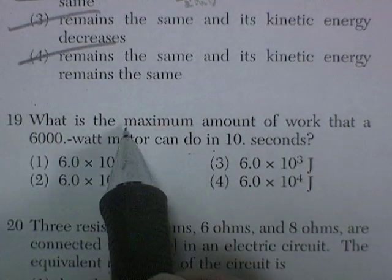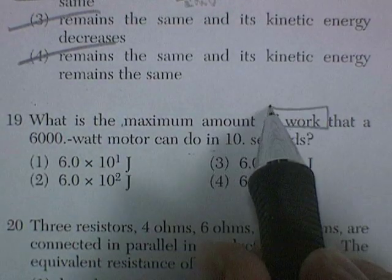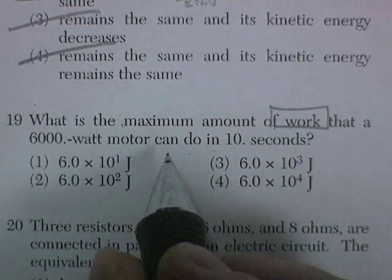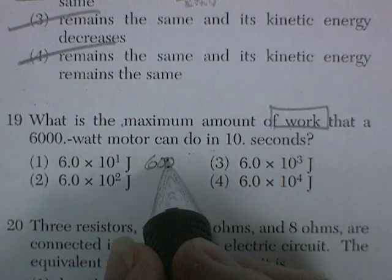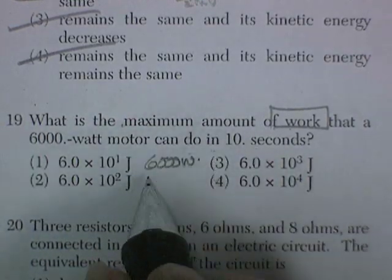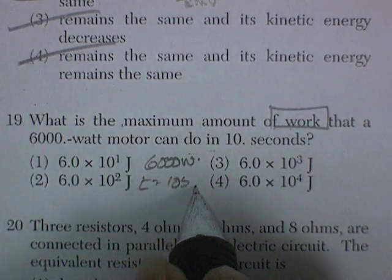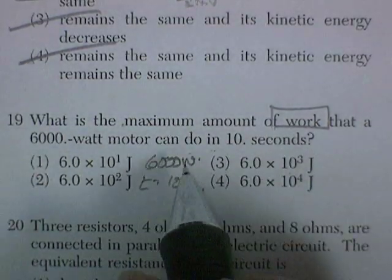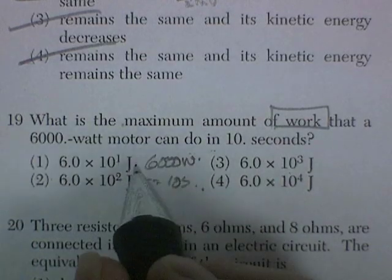Question 19. What is the maximum amount of work that a 6,000-watt motor can do in a time equal to 10 seconds? First of all, we've got to realize that 6,000 watts, that's the power.